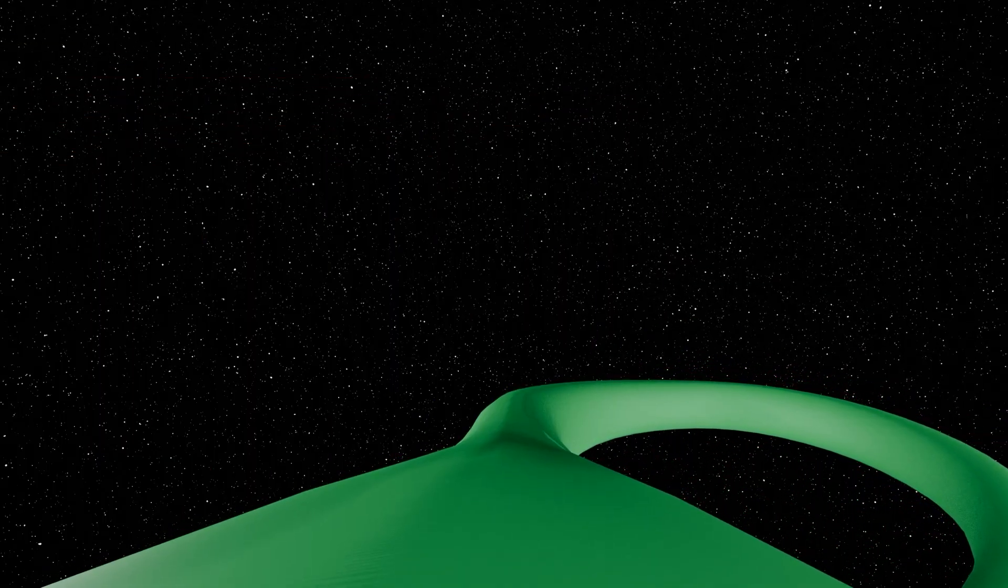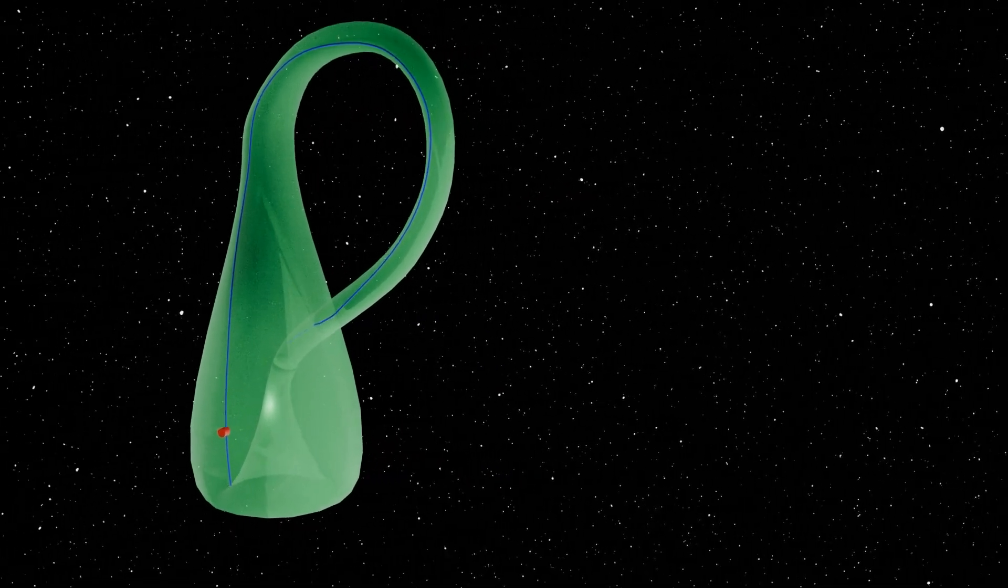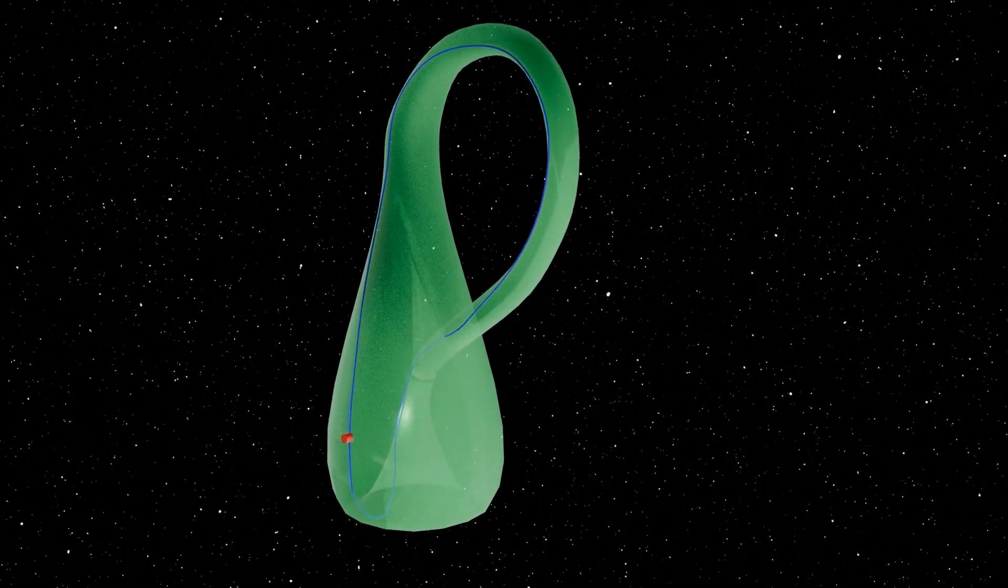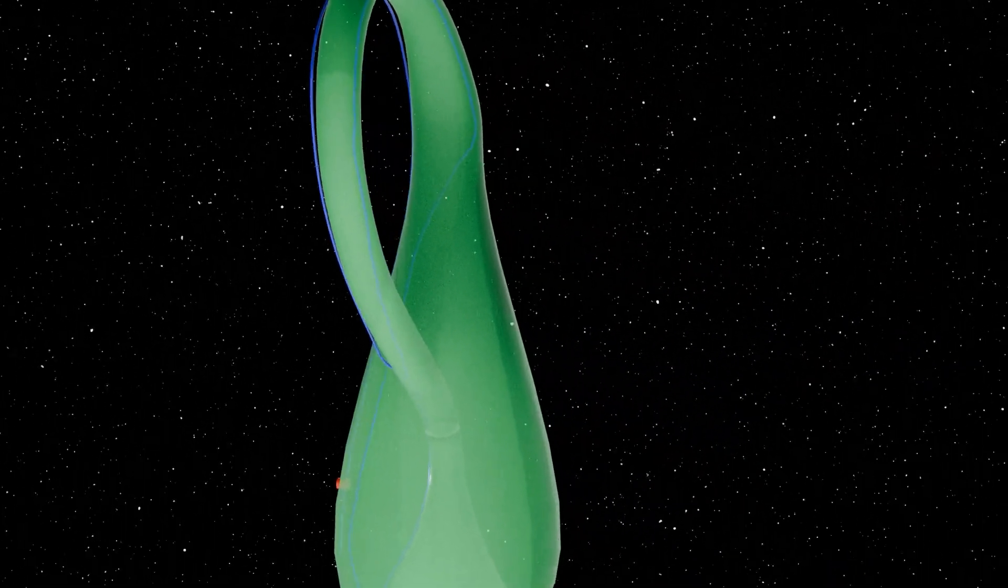We made it back to our original point, but we saw what was supposed to be the inside of the Klein Bottle for half the journey. This means that there is no separation between inside and outside in the Klein Bottle.